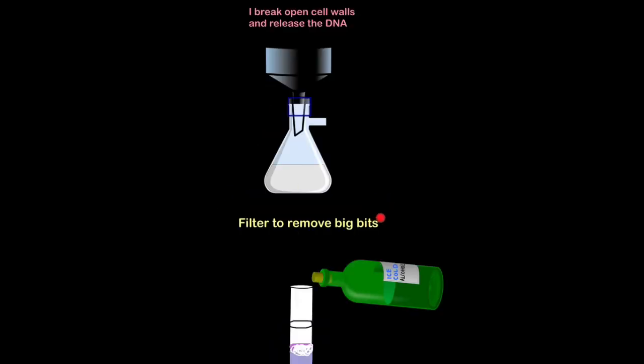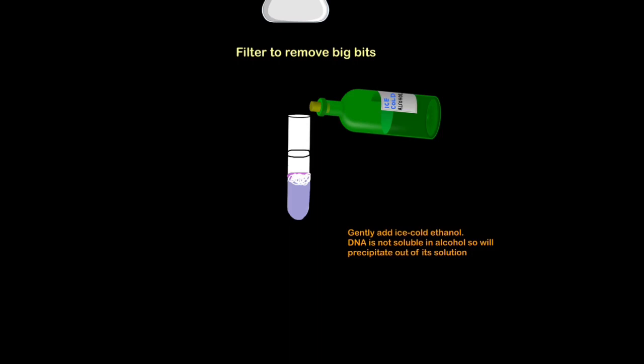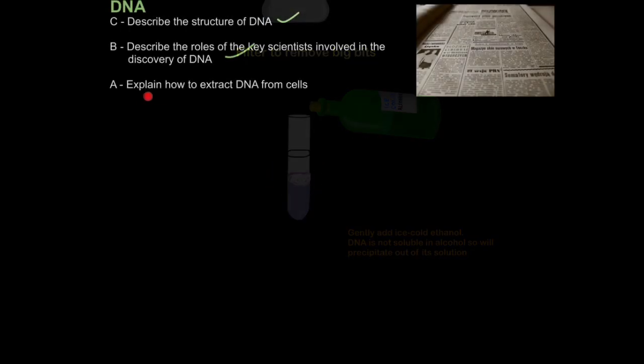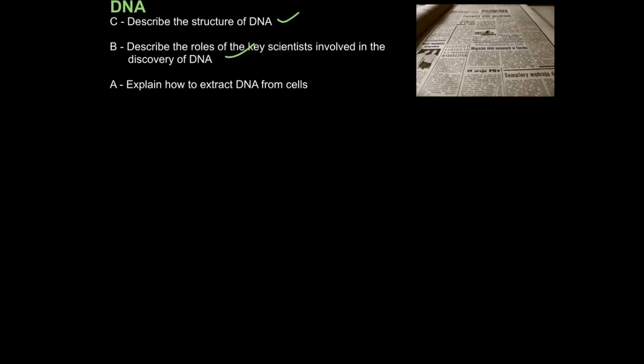Then filter the mixture to remove the big bits. Then finally, transfer the mixture to a test tube. Add some ice cold alcohol gently on top and the DNA will precipitate out at the interface where the alcohol meets the mixture. That is how to explain how to extract DNA from cells.